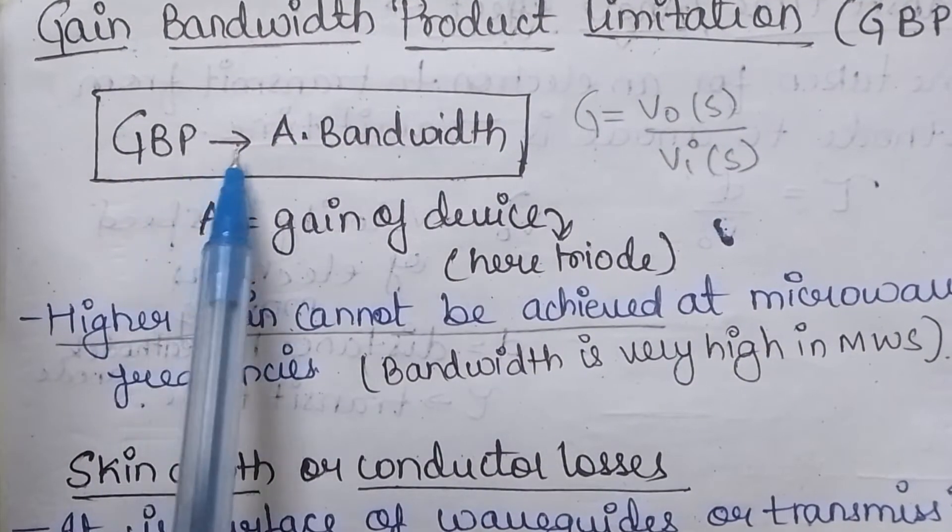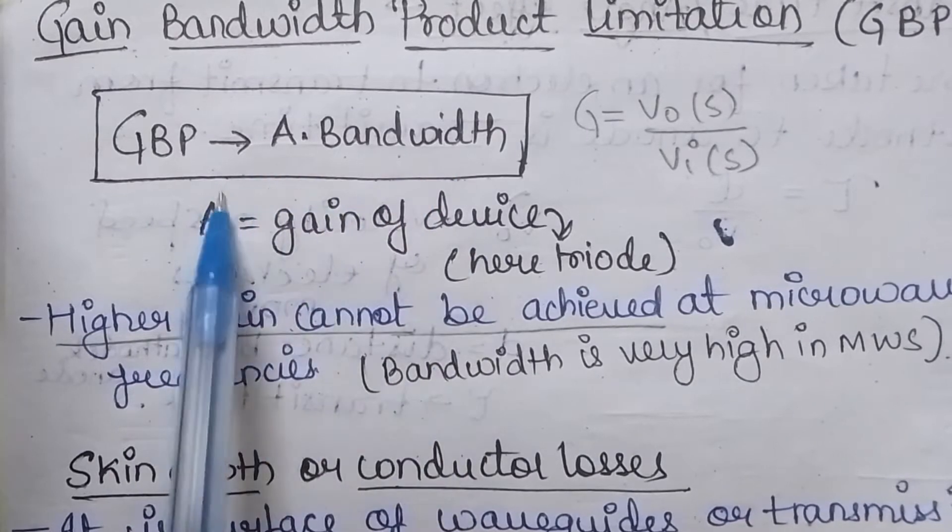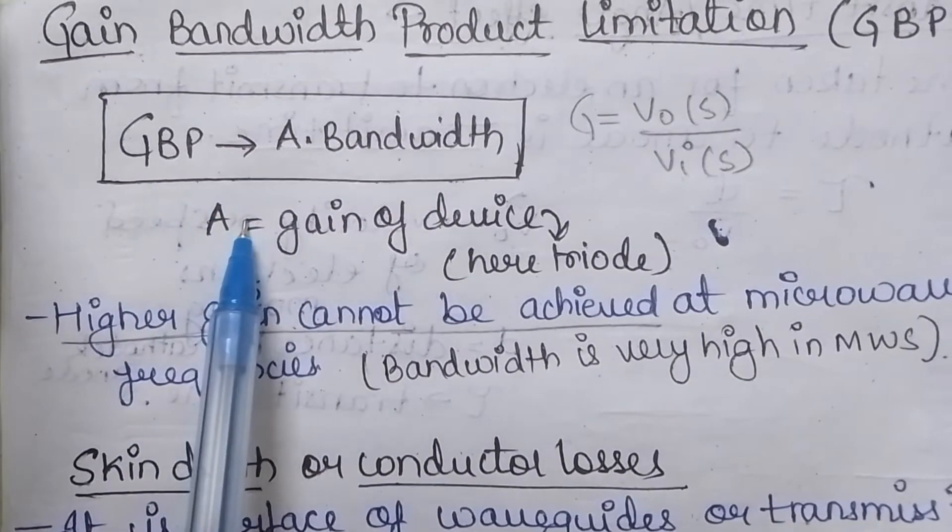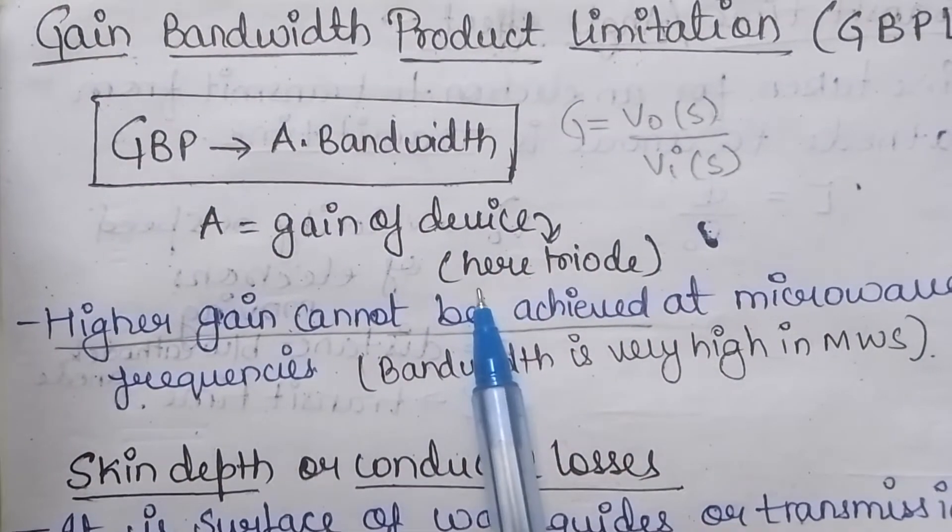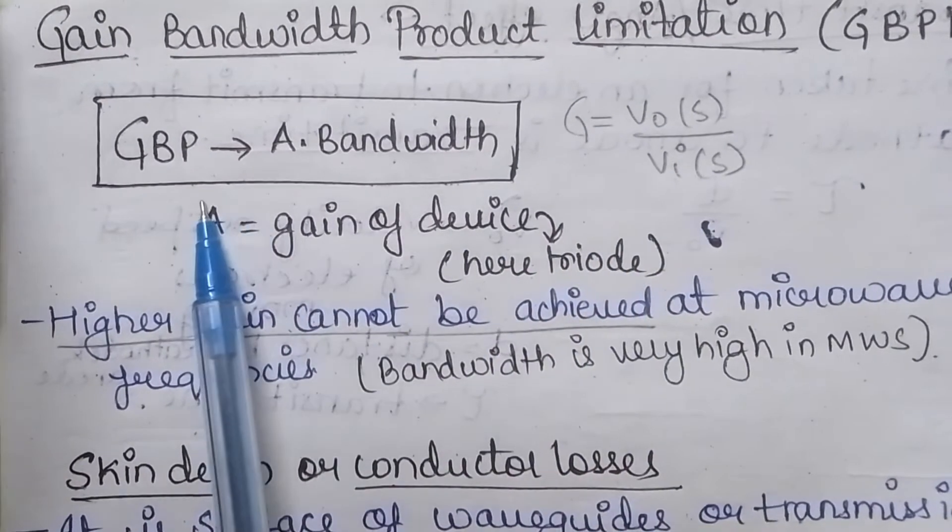So the GBP can be calculated as gain of the device into the bandwidth, where A represents the gain of the device. Here we are taking triode as an example, so the gain of the triode is the A here.